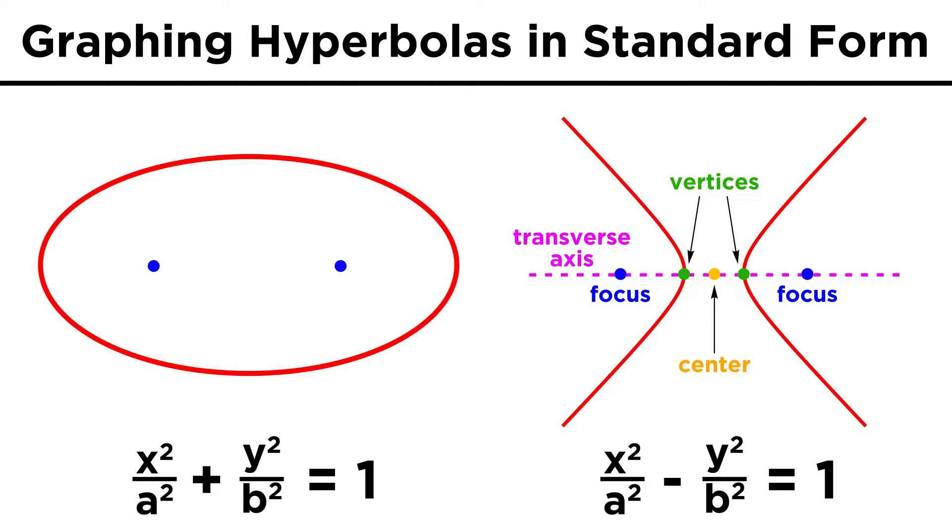The equation for a hyperbola will be extremely similar to that of an ellipse. In fact, the only difference is that instead of a plus here, we have a minus, which makes sense given the difference between distances to the foci being constant instead of the sum.